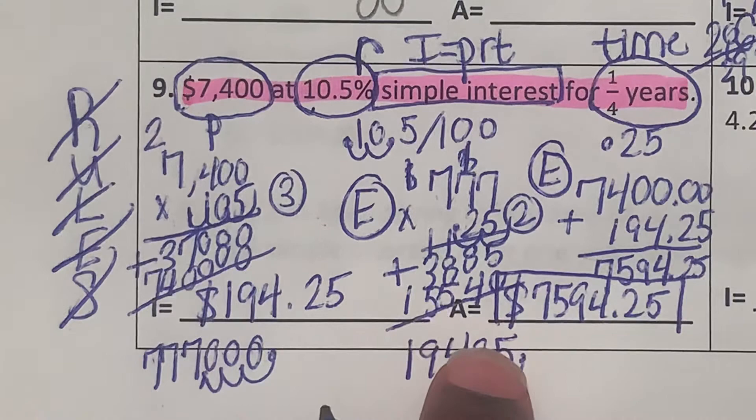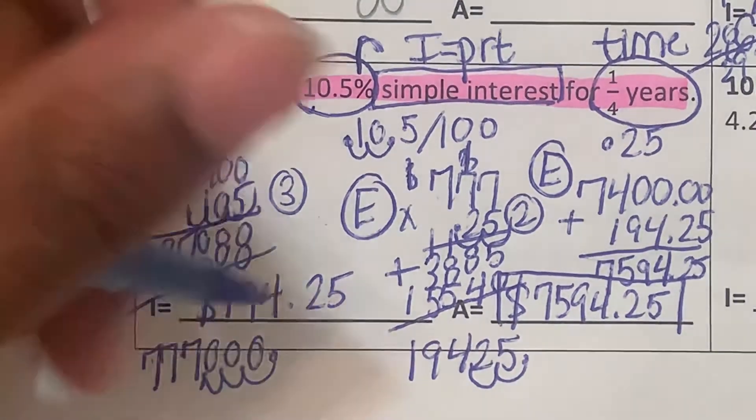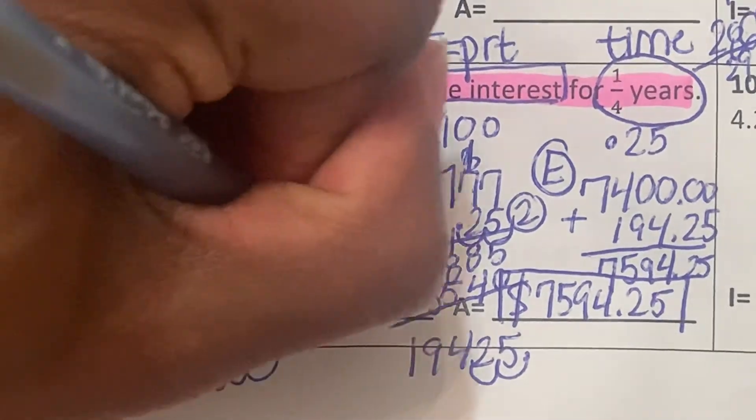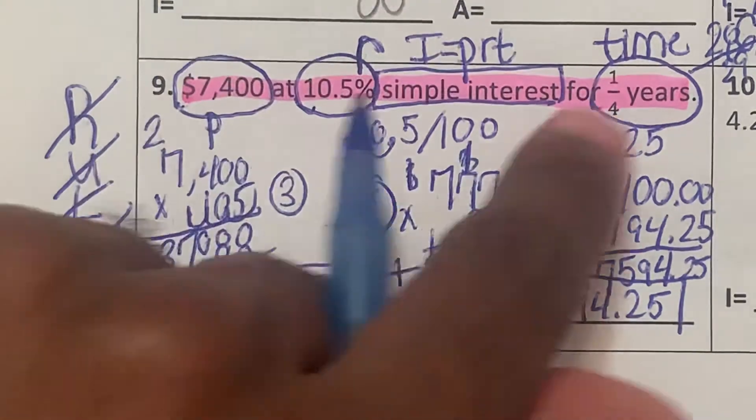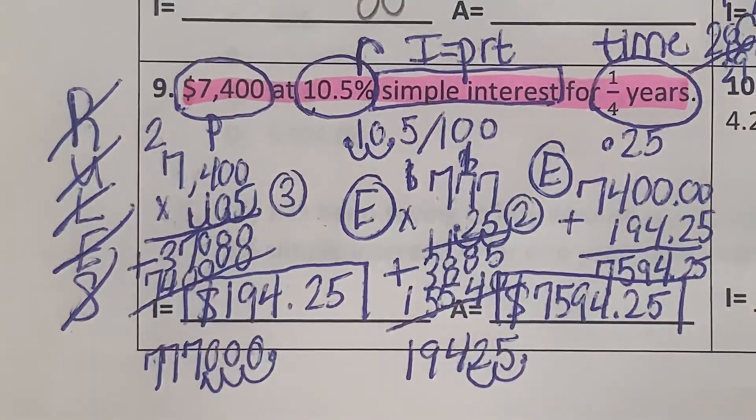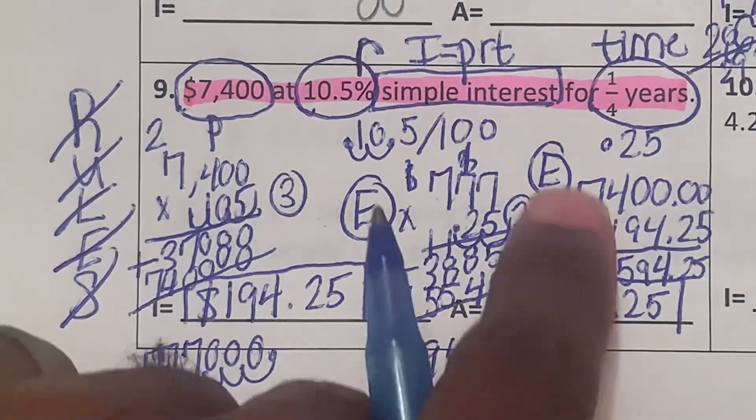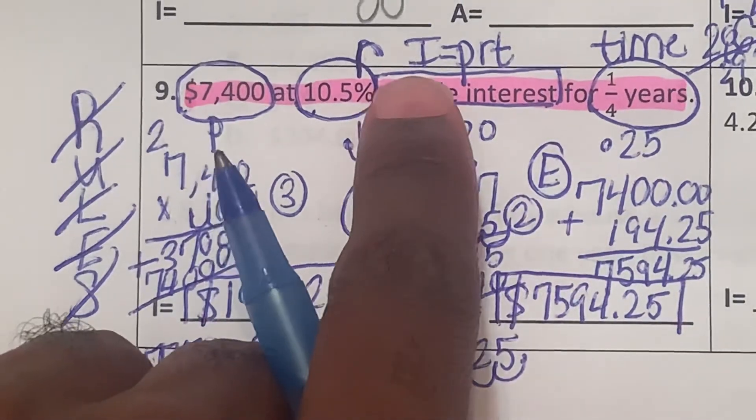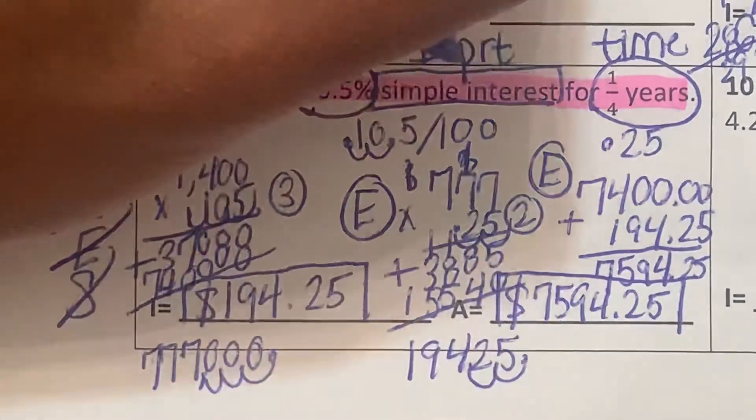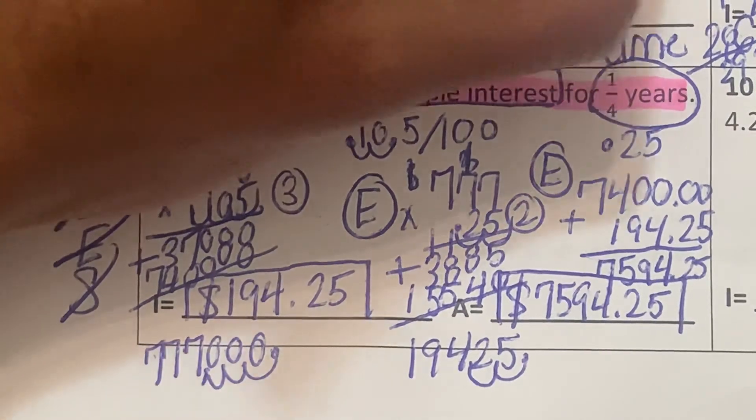Remember the A is the total amount and the I is the interest that was gained over that point in time. And the time was a quarter year. Y'all make sure that y'all are adding things like these into your notes. The simple interest formula is important to add to your notes.